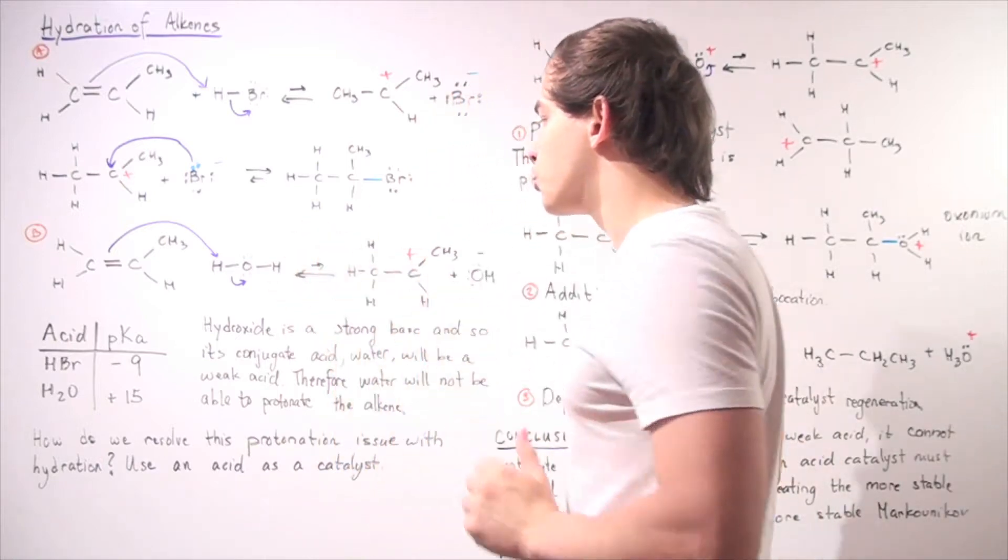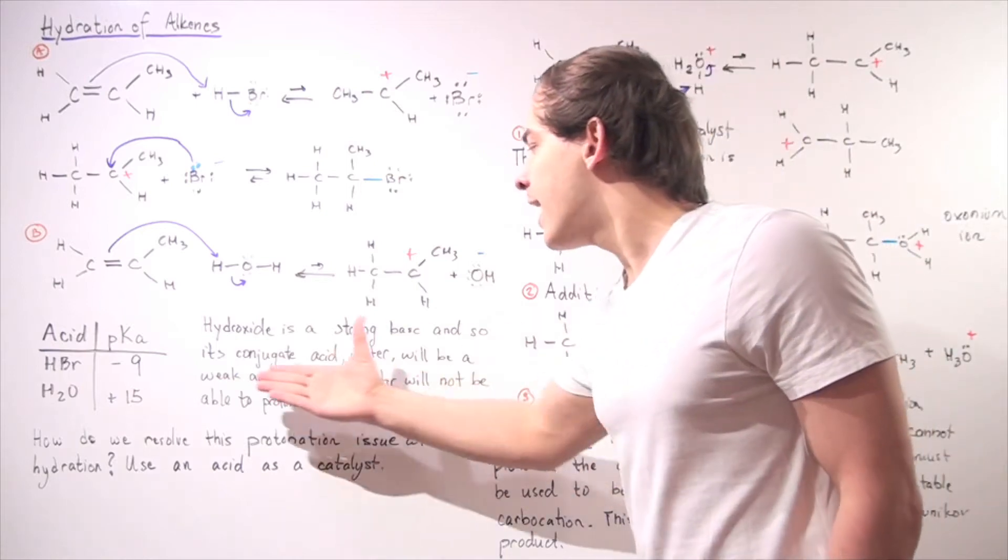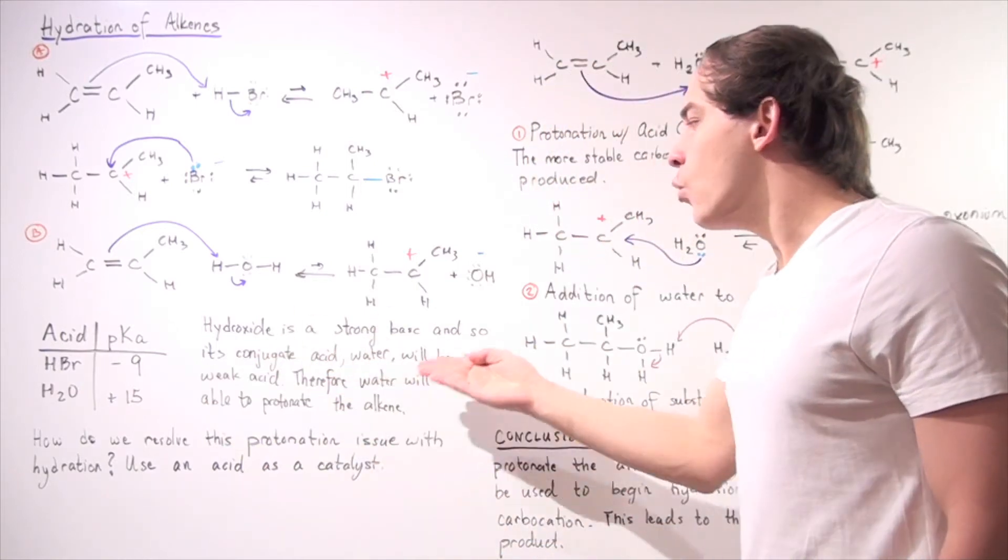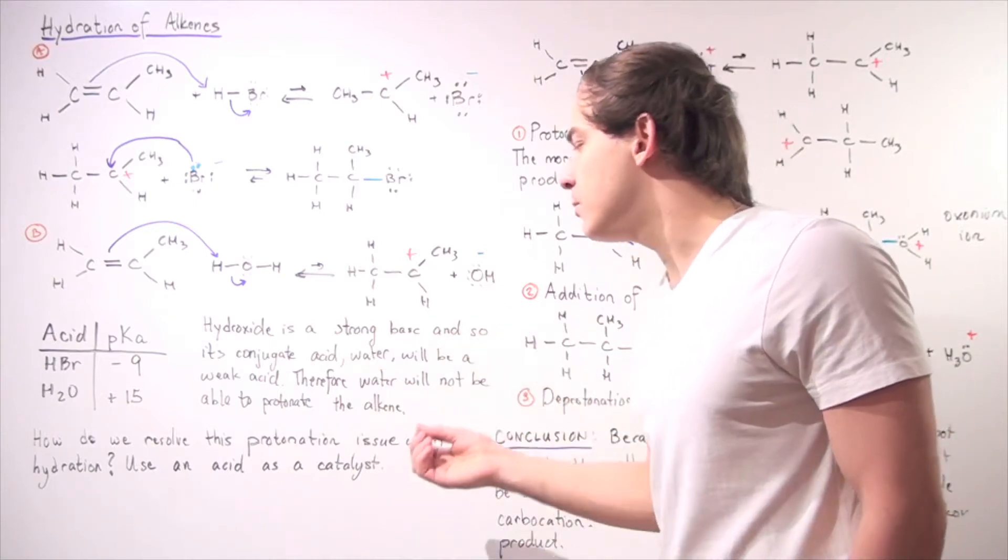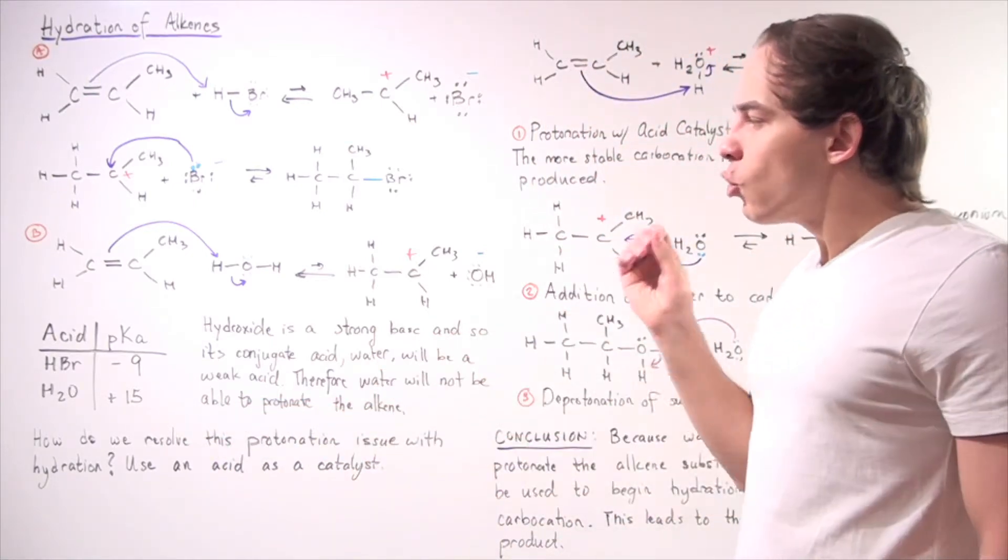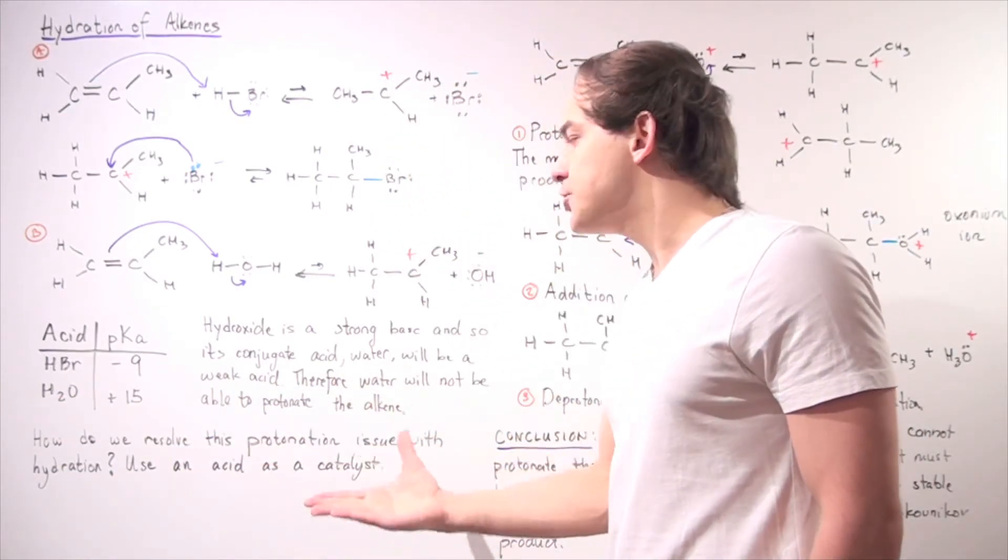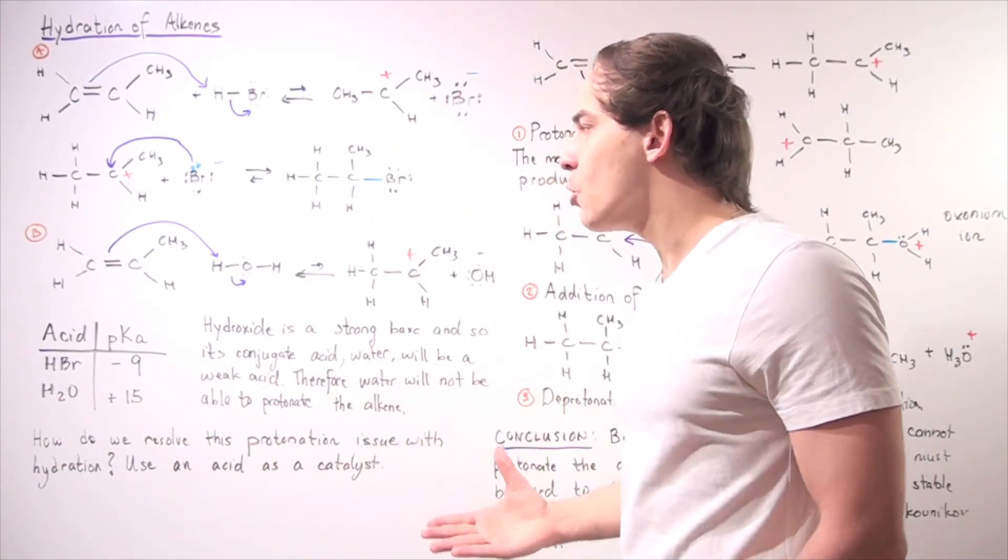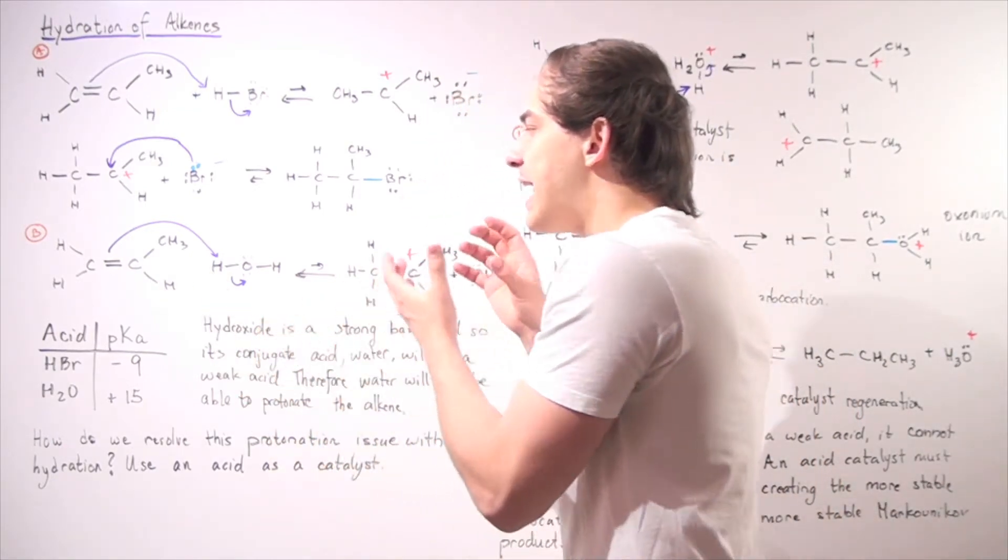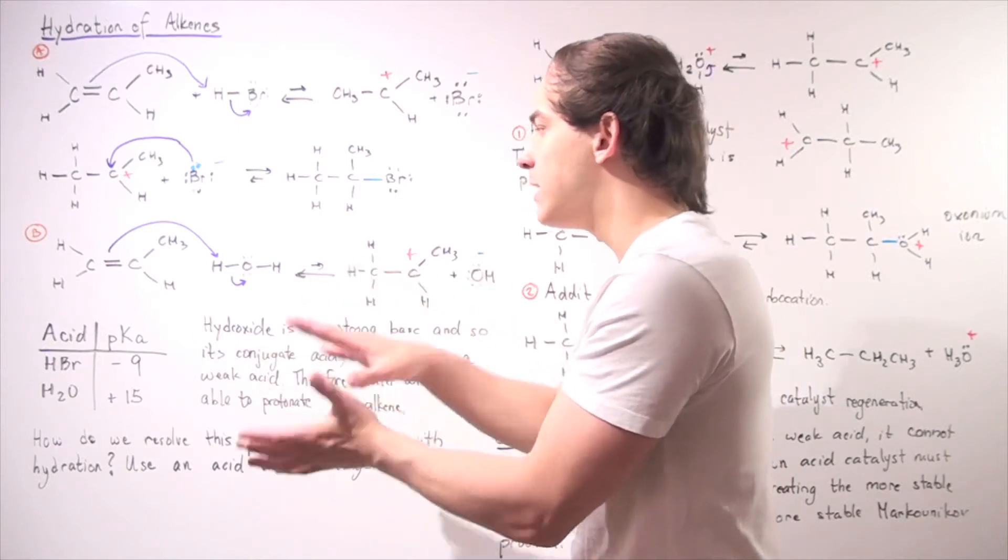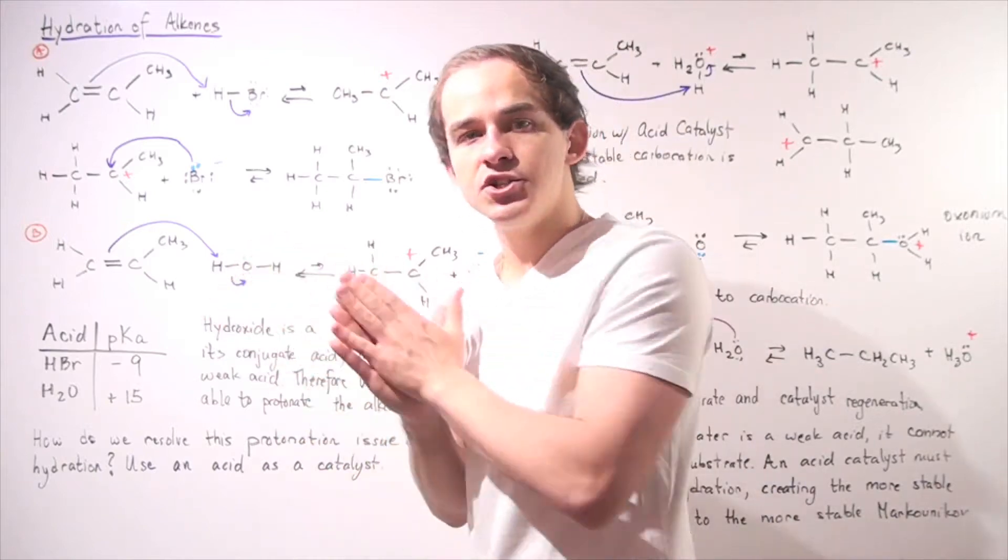So once again, hydroxide is a strong base and so its conjugate acid, water, will be a weak acid. Therefore water will not be able to protonate the alkene. So the question is the following, how do we resolve this protonation issue with hydration? So hydration is simply the addition of our water molecule that is able to create an alcohol as we'll see in just a moment. So how do we resolve this issue?